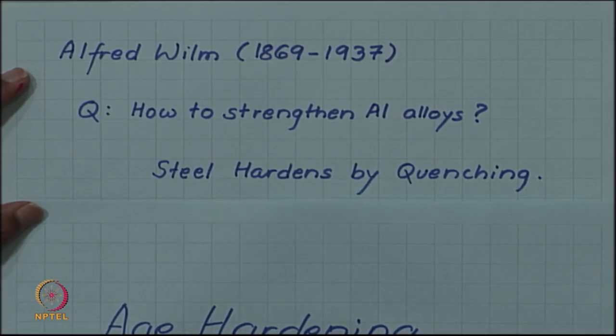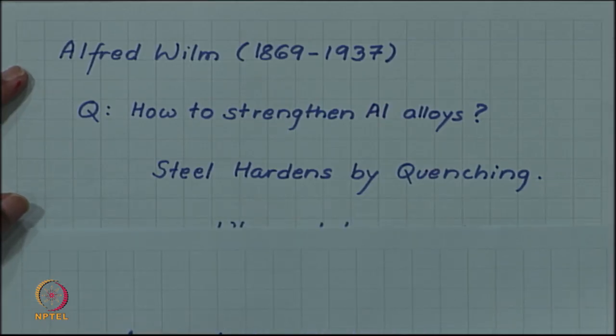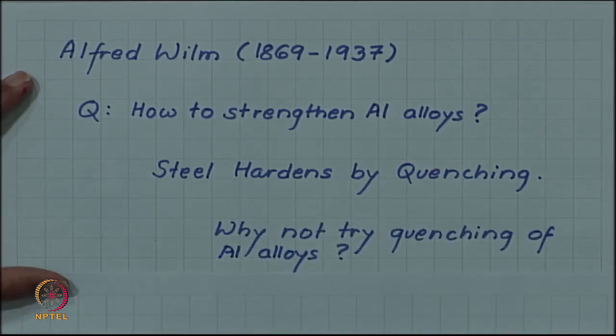He had the background from steel that steel hardens by quenching. We have seen that steel if taken to the austenite phase field and then quenched rapidly enough to miss the nose of the TTT curve it hardens because it forms a very hard and brittle martensite. His natural curiosity or natural query was that can I harden aluminum alloys also by quenching?